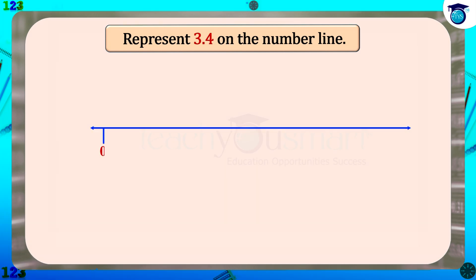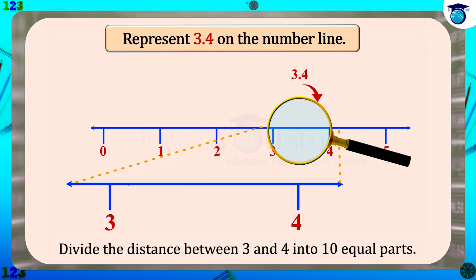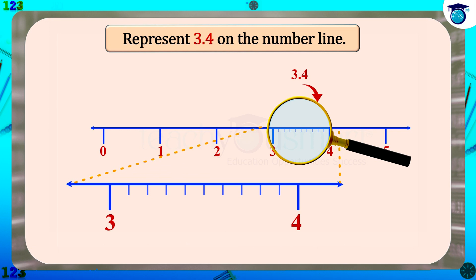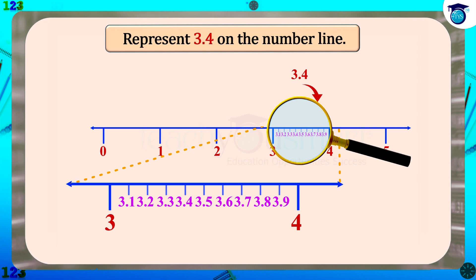First, draw a number line and mark the numbers. We know 3.4 lies between 3 and 4, so divide the distance between 3 and 4 into 10 equal parts, and mark each part as 3.1, 3.2, etc. to 3.9. The fourth part after 3 represents 3.4 on the number line.